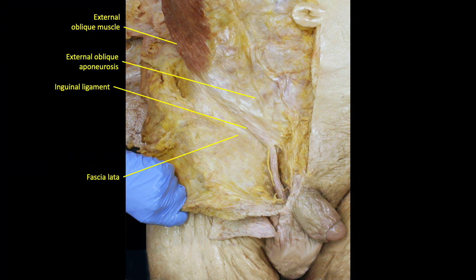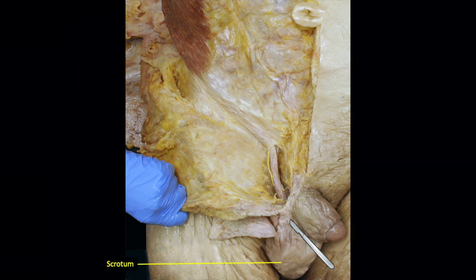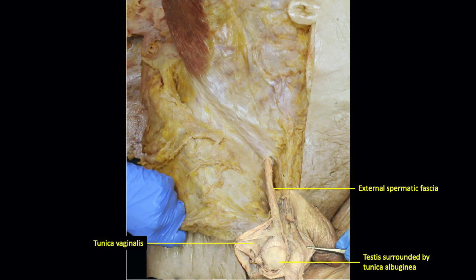We now clearly see the superficial inguinal ring and the passage of the spermatic cord through it. Accompanying the cord is the ilioinguinal nerve. Continuing the incision into the scrotum exposes the testis and its associated structures. Cutting through the various layers of the spermatic cord ultimately exposes the testis encased in its tunica albuginea, the tough fibrous capsule.